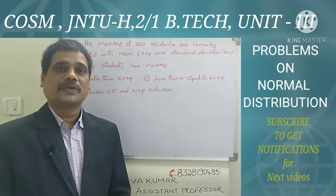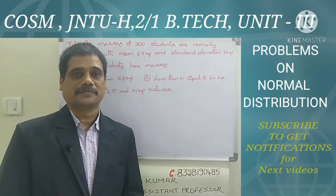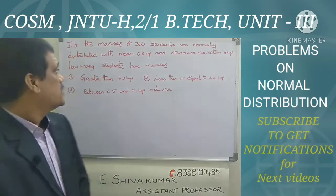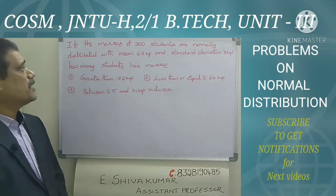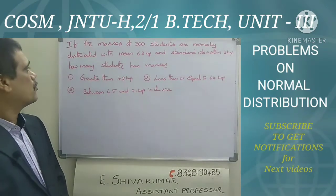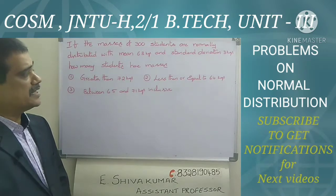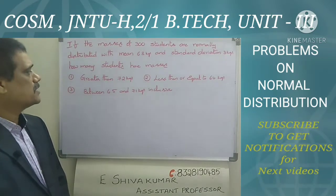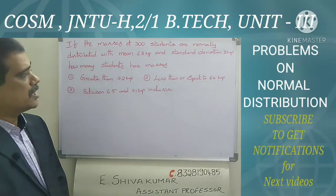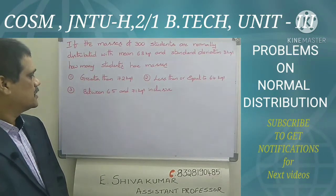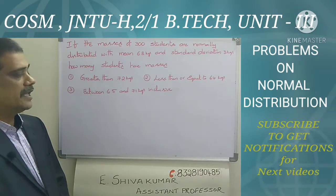Good morning students. In this video I am going to explain a problem related to the normal distribution. Everyone note this question. If the masses of 300 students are normally distributed with mean 68 kg and standard deviation 3 kg, how many students have masses greater than 72 kg, less than or equal to 64 kg,